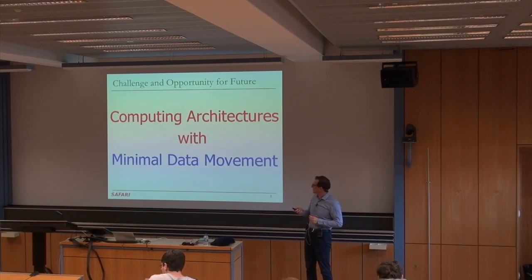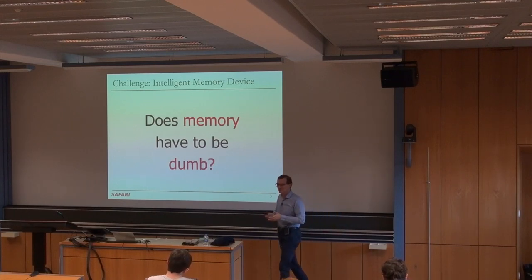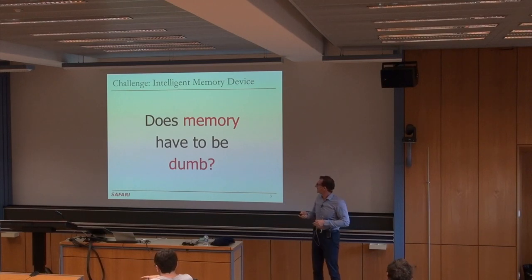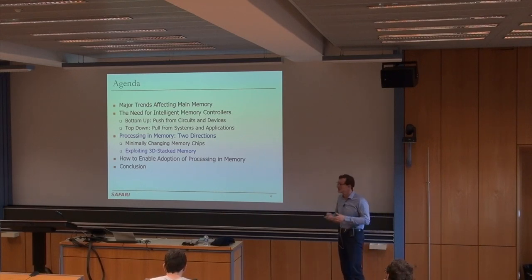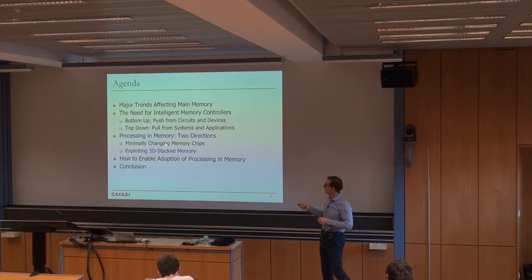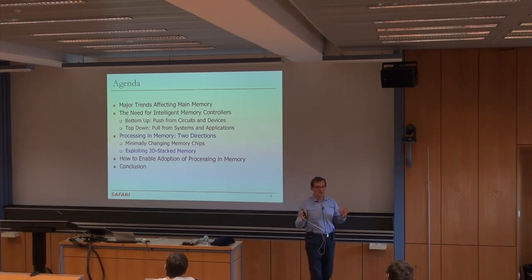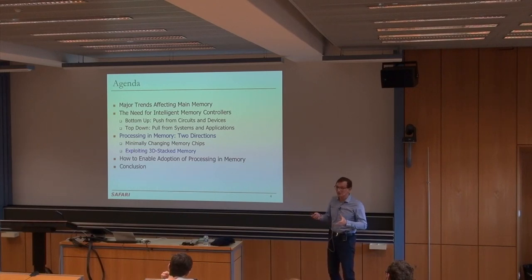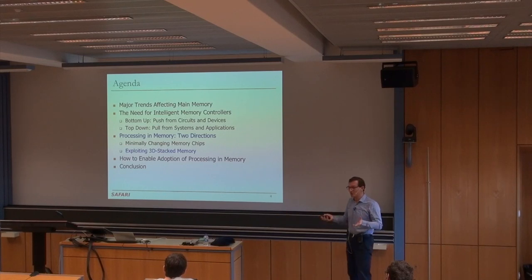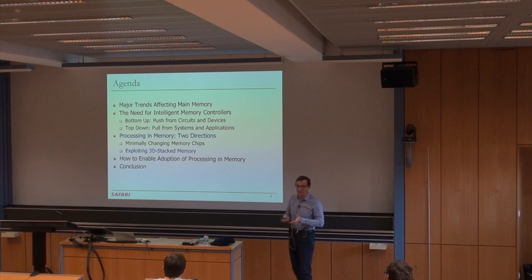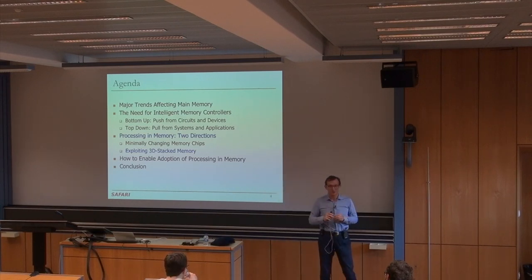It's an exciting area. The question we asked was: can we actually design computing architectures with minimal data movement? We also raised the question: does memory have to be dumb? If you want minimal data movement, your memory needs to be intelligent. We covered the top-down approach to intelligent memory controllers and the first direction in processing in memory — minimally changing process memory chips so they can do very specialized computation. We built bulk bitwise operations inside DRAM, and you can actually do any computation with those, but you may not be able to map any computation very efficiently to that bulk bitwise substrate.